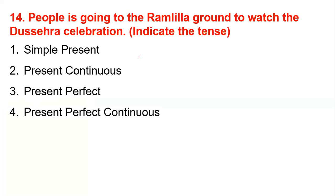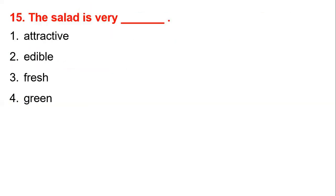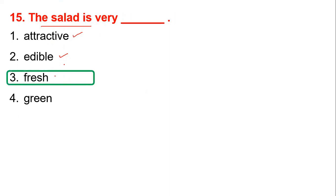People is going to the Ramlila ground — the question is about identifying the tense. It is present continuous tense. Next: 'the salad is very dash' — options include attractive, edible, fresh. The salad is very fresh, so option 3 is the correct answer.